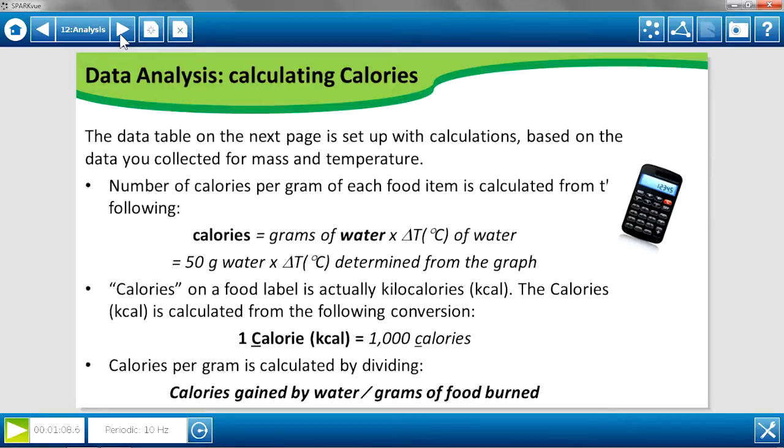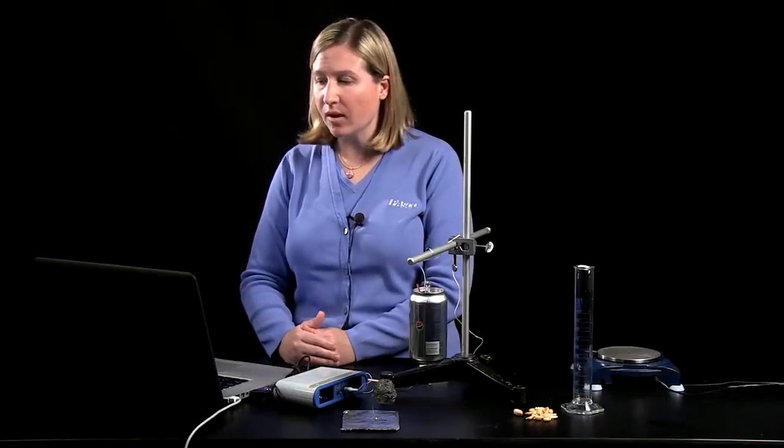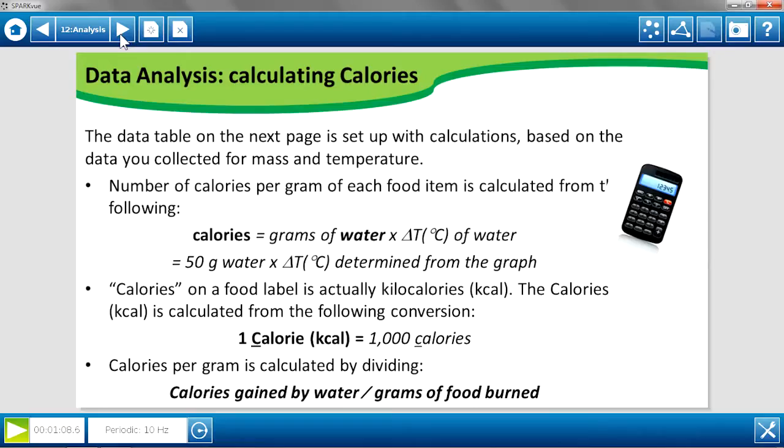So once we have the data on mass and temperature, here's how we calculate to calories. Again, on the next data table, I have preset calculations that will do the math for us today. But these are the three equations that you would discuss with your students. One is just finding the calories, the heat gained by the water. So we have our 50 grams of water multiplied by the change in temperature that occurred within that water. So multiplying those values will give us the quantity of energy that is gained by the water from the food.